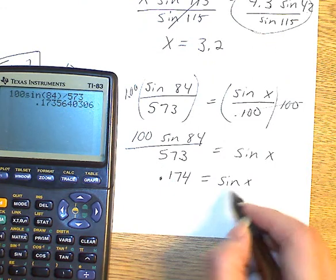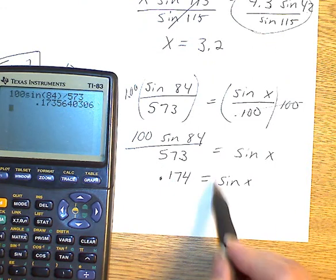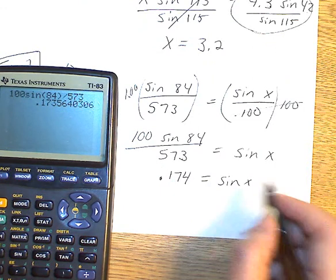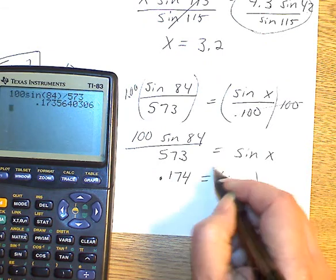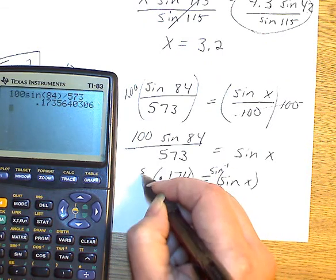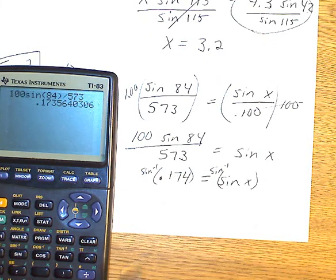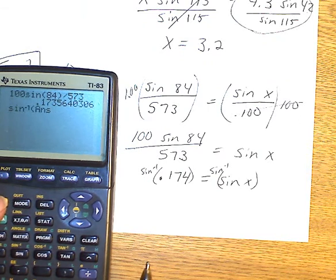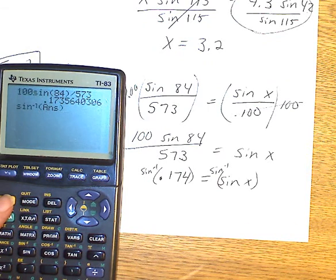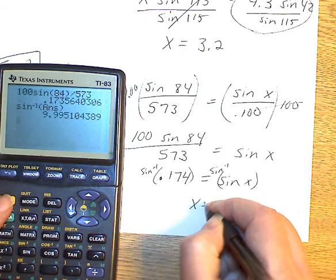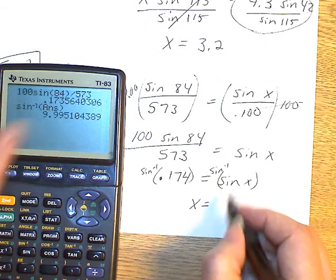How do I solve for X now? So now I have to take the sine inverse. So I'm going to go sine inverse of my answer. That gives me X to be 9.99, so about 10 degrees.